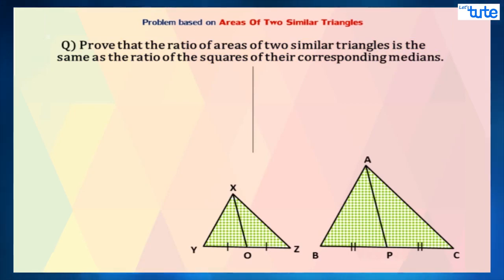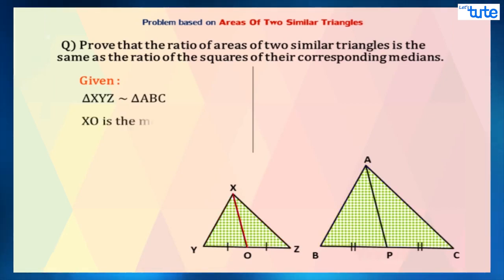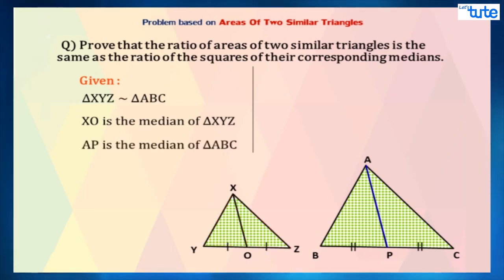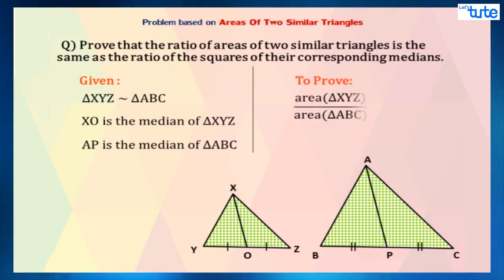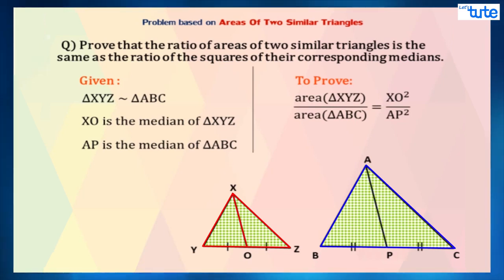We will consider the two similar triangles to be triangle XYZ and triangle ABC. XO is the median of triangle XYZ and AP is the median of triangle ABC. So here, we have been asked to prove that area of triangle XYZ upon area of triangle ABC equals XO square upon AP square.